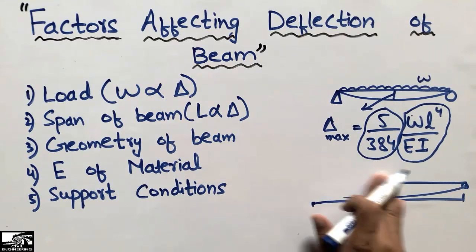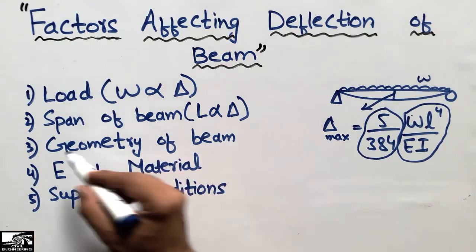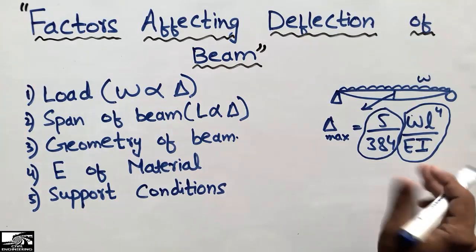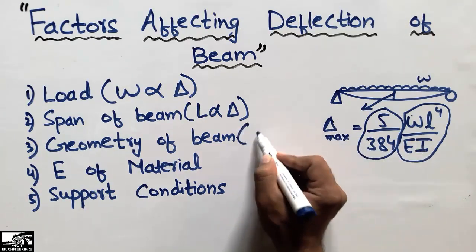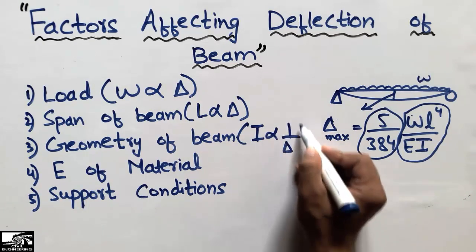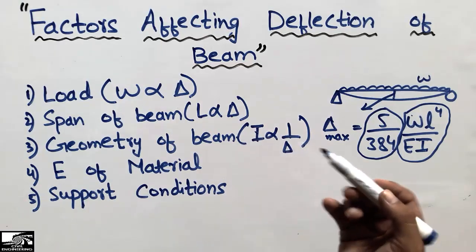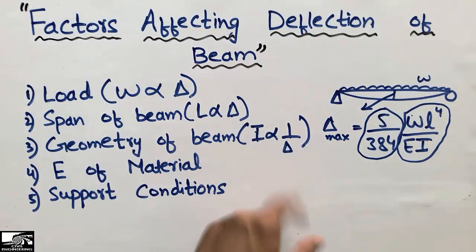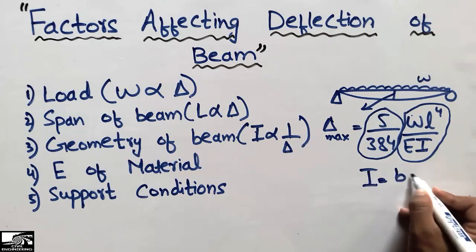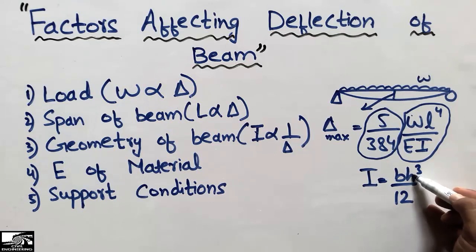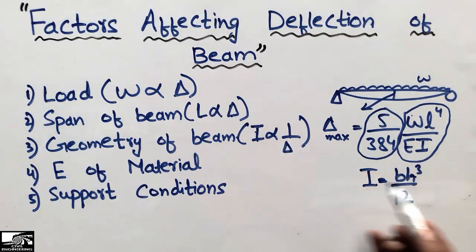The third factor is the geometry of the beam, represented by I — the moment of inertia. An object with a greater moment of inertia will show less deflection, so this is an inverse relation with deflection. If you have an object with higher moment of inertia, it will show less deflection; with less moment of inertia, it will show higher deflection. For a rectangular beam, the moment of inertia is found by the formula I = bh³/12. A greater depth of beam gives greater moment of inertia and ultimately less deflection.